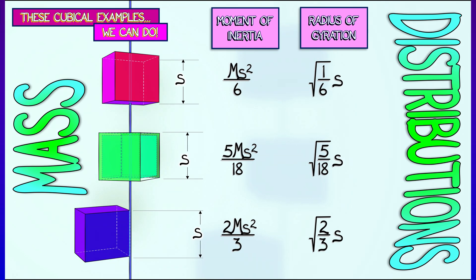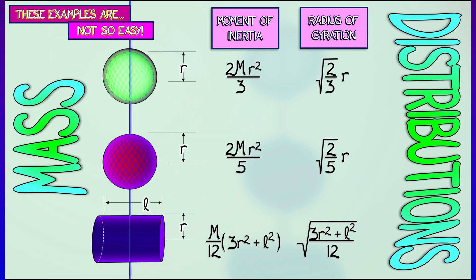Now those are nice examples, examples we can do. There are lots of examples that you cannot yet do that we don't yet have the right coordinate systems for, things like solid balls or spherical shells, cylinders, all these kinds of objects.